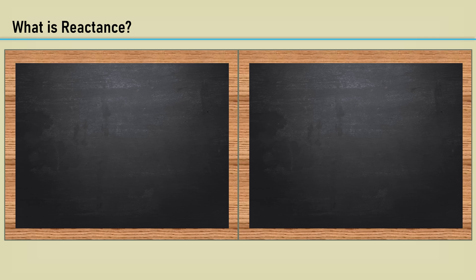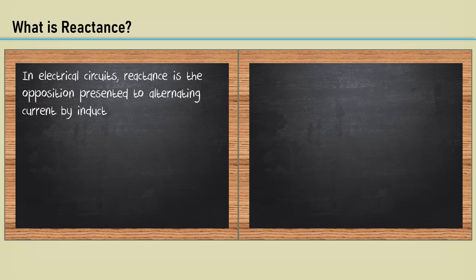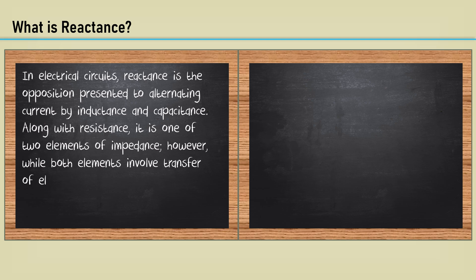What is reactance? In electrical circuits, reactance is the opposition presented to alternating current by inductance and capacitance. Along with resistance, it is one of the two elements of impedance. However, while both elements involve transfer of electrical energy, no dissipation of electrical energy as heat occurs in reactance.